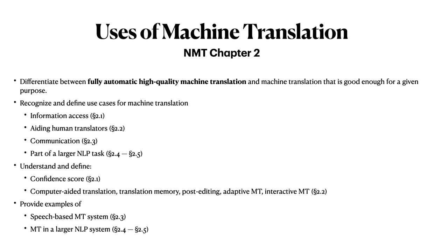Next is content from Chapter 2 of Neural Machine Translation. You will be able to differentiate between fully automatic, high-quality machine translation and machine translation that is good enough for a given purpose. You will recognize and be able to define use cases for machine translation, including information access, aiding human translators, communication, and as part of a larger NLP task.